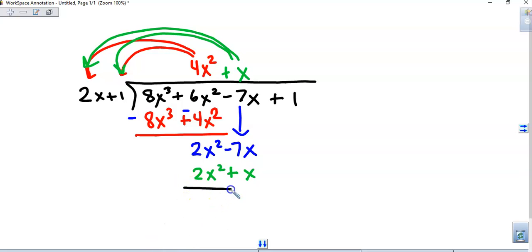Draw the line, change the signs. That will combine to negative 8x. Bring down the plus 1.